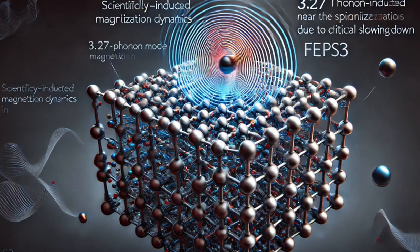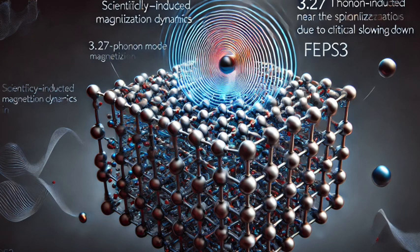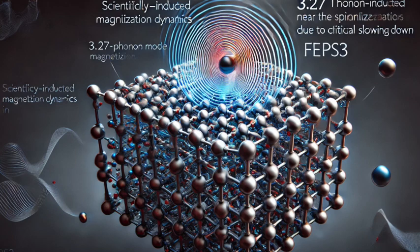Like they can see how it evolves over time, from that initial moment when the terahertz pulse hits the material to the slow relaxation process that follows. It's like watching a high-speed movie of the magnetization happening in real time. Exactly. And what they see matches perfectly with their theoretical predictions. They see that rapid increase in magnetization when the terahertz pulse hits, followed by the much slower decay governed by that critical slowing down we talked about.